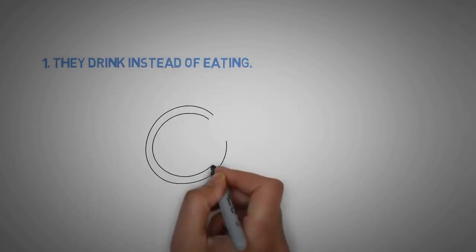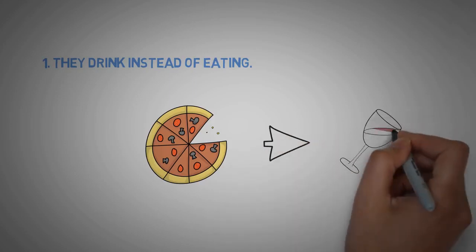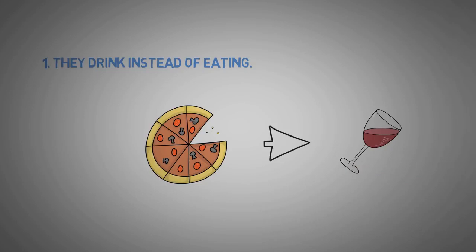1. They drink instead of eating. Alcoholics will often replace meals with a few drinks, lose interest in food altogether, or use mealtime as an excuse to start drinking.